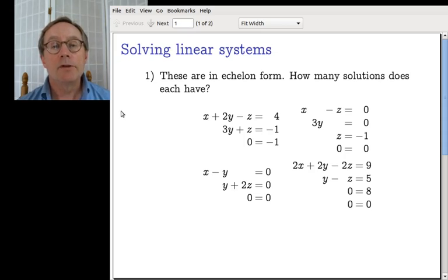So here, again, there's a zero equals zero, but again, we're not going to be confused. There is a row led by x, and there's a row led by y, but there's no row led by z. So we're looking at infinitely many solutions in this case.